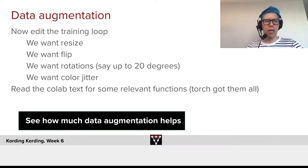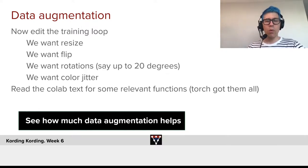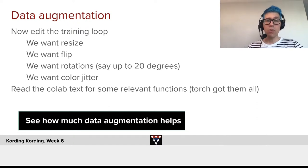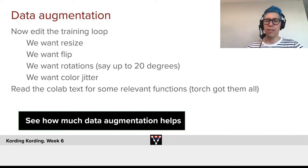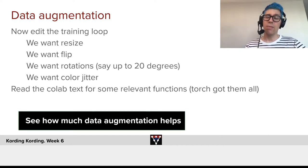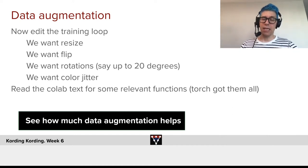So now I want you to edit the training loop. What will we want? We want some resizes, some flips, some rotations — say, up to 20 degrees — and some color jitter. Read the colab text for some of the relevant functions, and then see how much data augmentation can help.